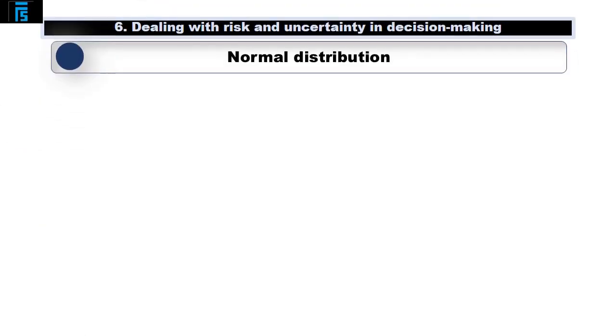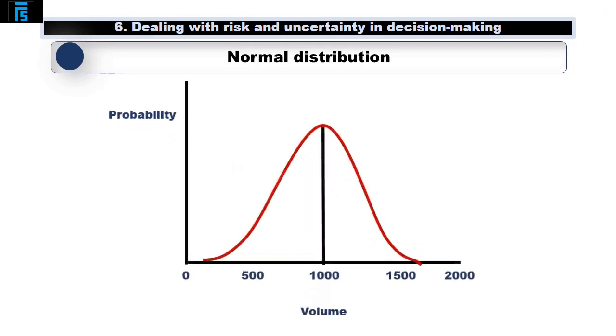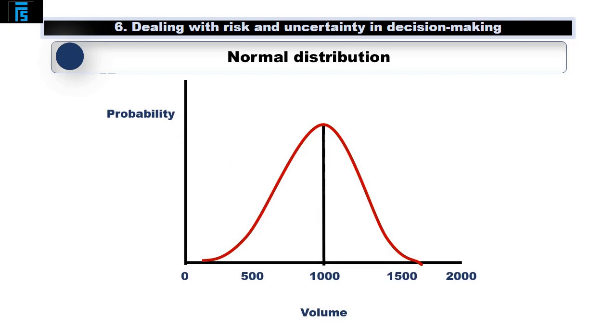Many variables are normally distributed. In this sense, the word normal is a technical term. Here is an example of a normal distribution that might better represent the potential volume of sales.